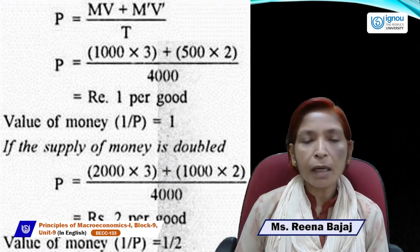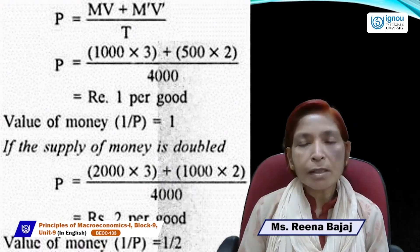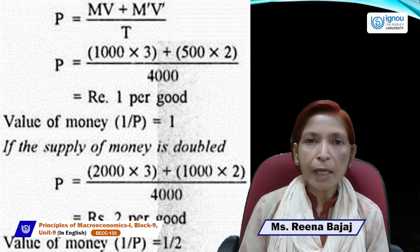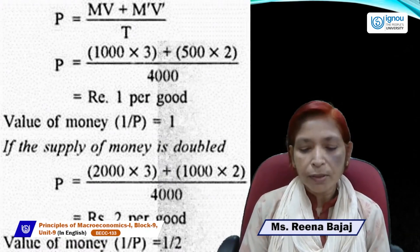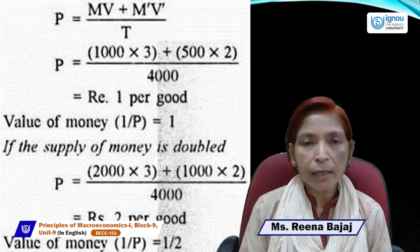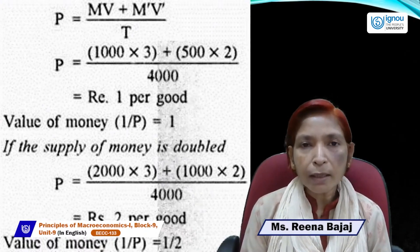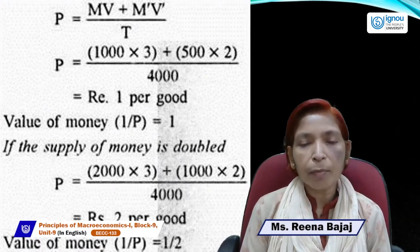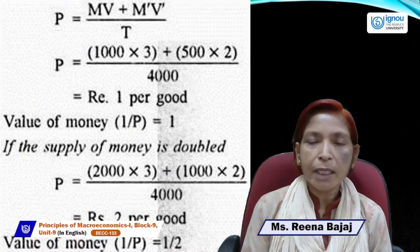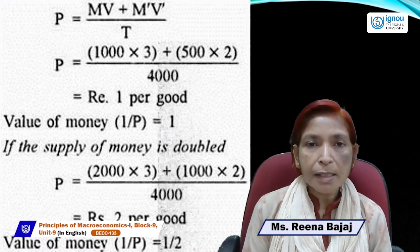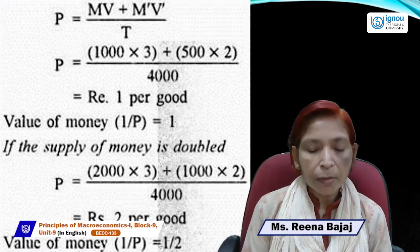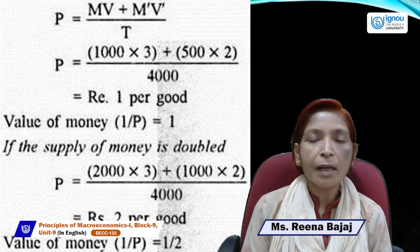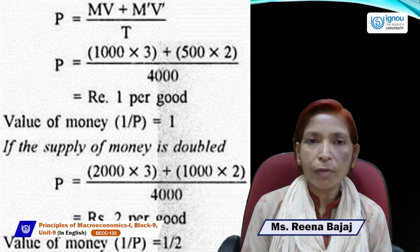When money supply doubles, price level also doubles. If money supply is halved, price level will be halved. So there is a direct and proportionate relationship between money supply and general price level. The value of money can be calculated by the reciprocal of price: 1/P. The main concept of QTM can be explained with both the modified equation and the initial equation MV = PT.